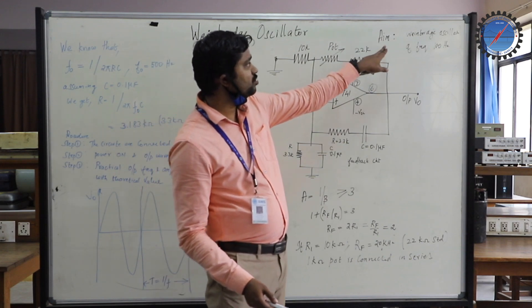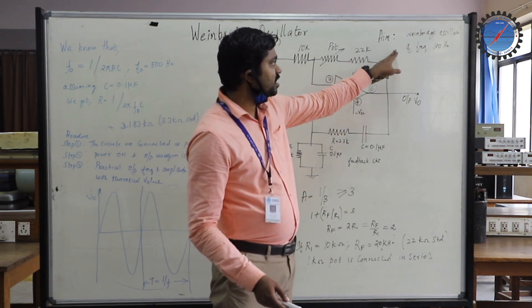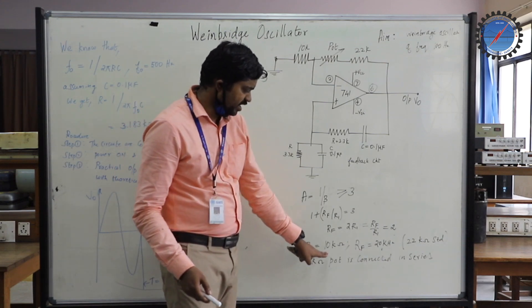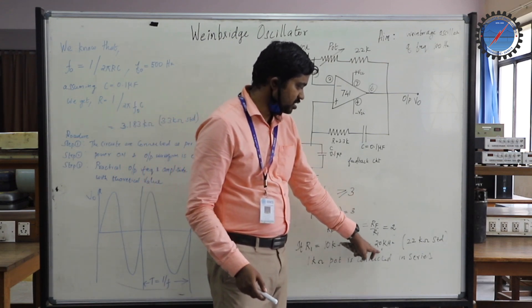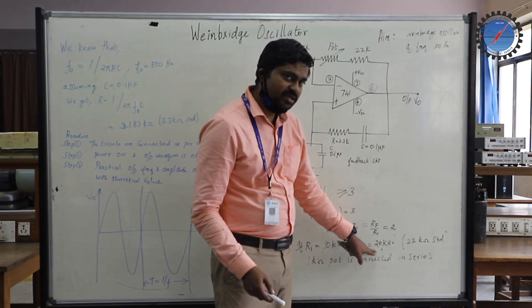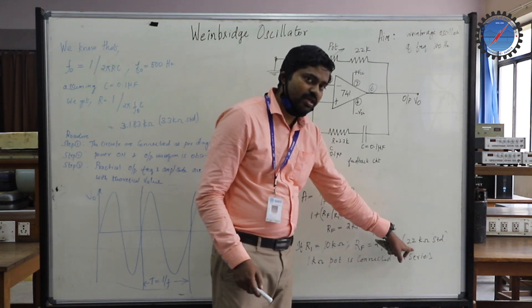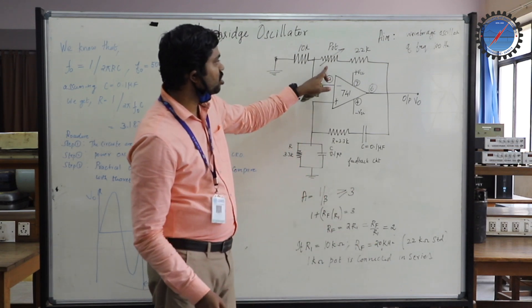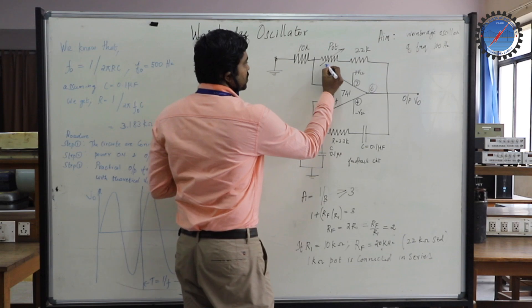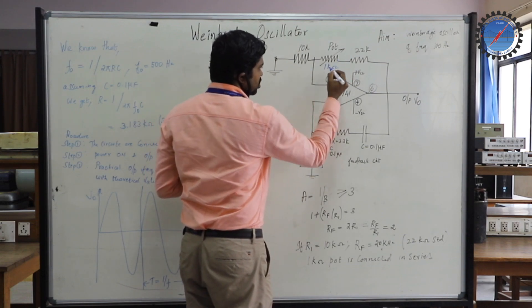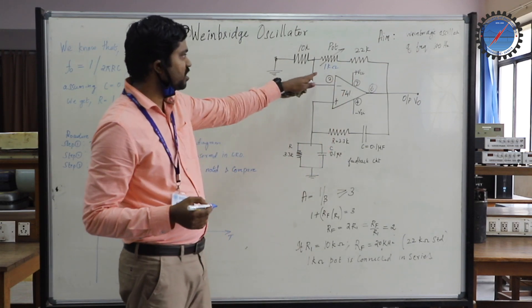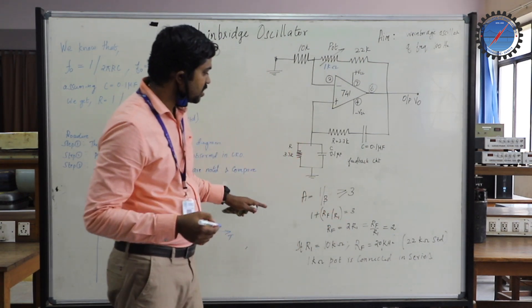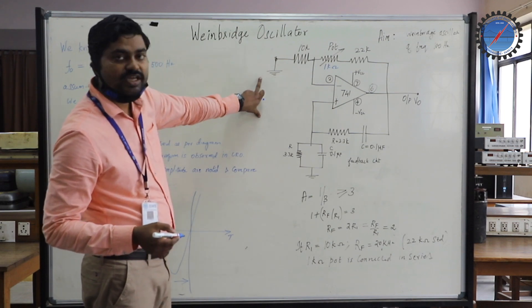Here they ask you to design for a frequency of 100 Hz. So R1 is 10 KHz and Rf is 20 KHz. Since 20 KHz is not available in the laboratory, we use 22 KHz as the standard resistor. A 1KHz pot is connected in series, so 1KHz pot, R1 is 10KHz, and R2 is 22KHz as shown in the circuit diagram.